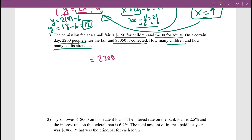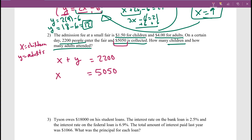We need another equation using the money collected. For each child the charge is $1.50, so 1.5 times x gives the total revenue from children. For each adult it's $4, so 4 times y gives adult revenue. Together: 1.5x plus 4y equals 5,050. Now we have a system of two equations. I'll use elimination to eliminate y by multiplying the first equation by negative 4, giving: negative 4x minus 4y equals negative 8,800.